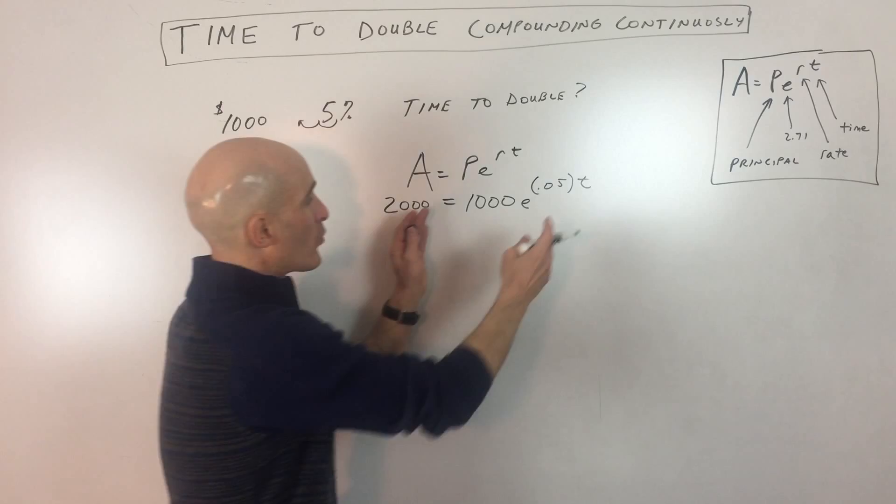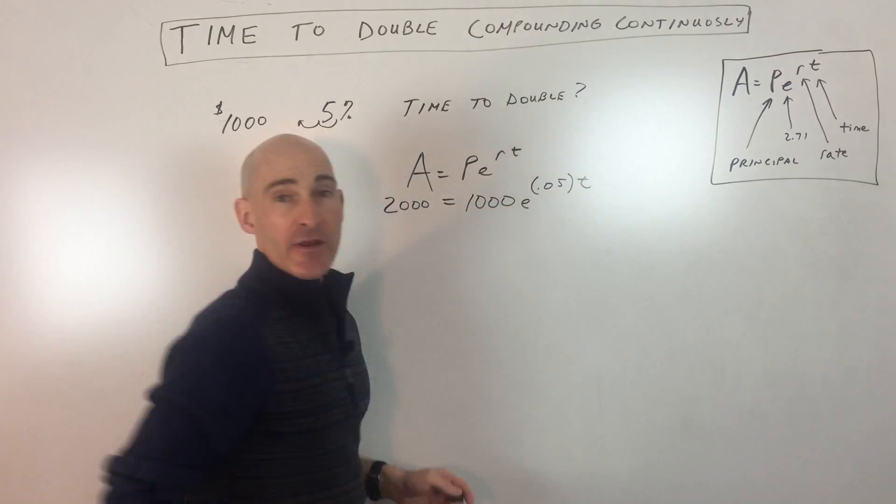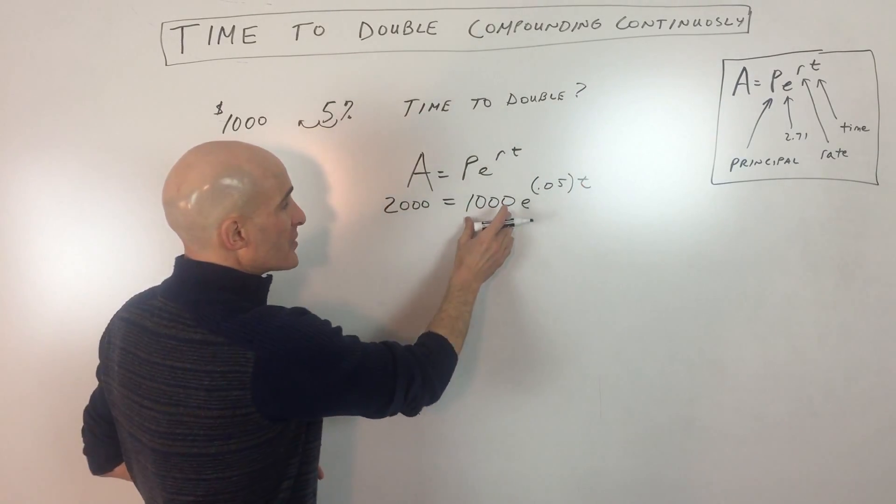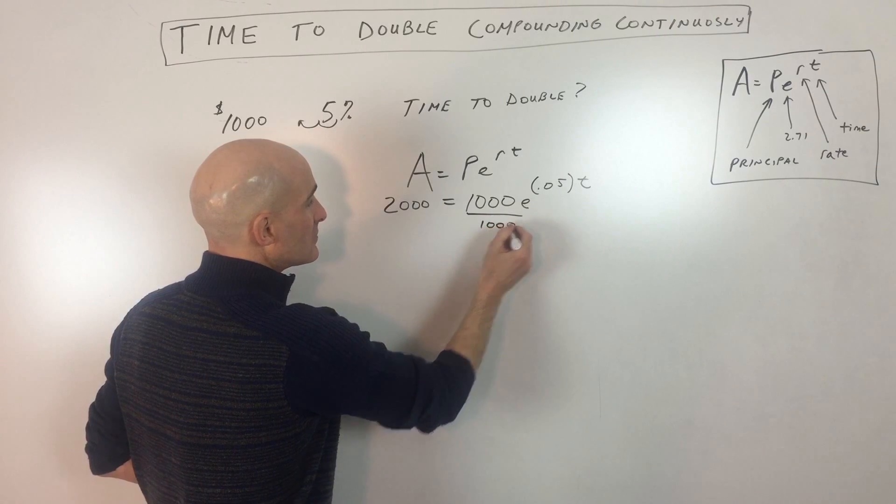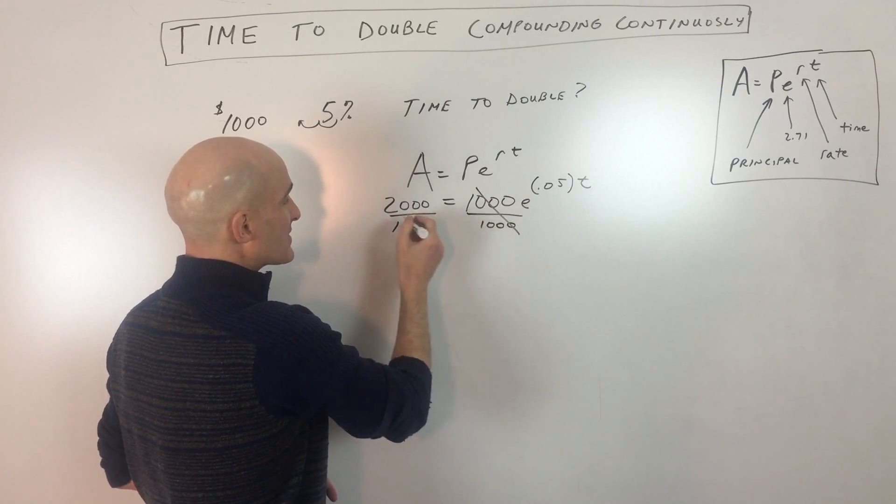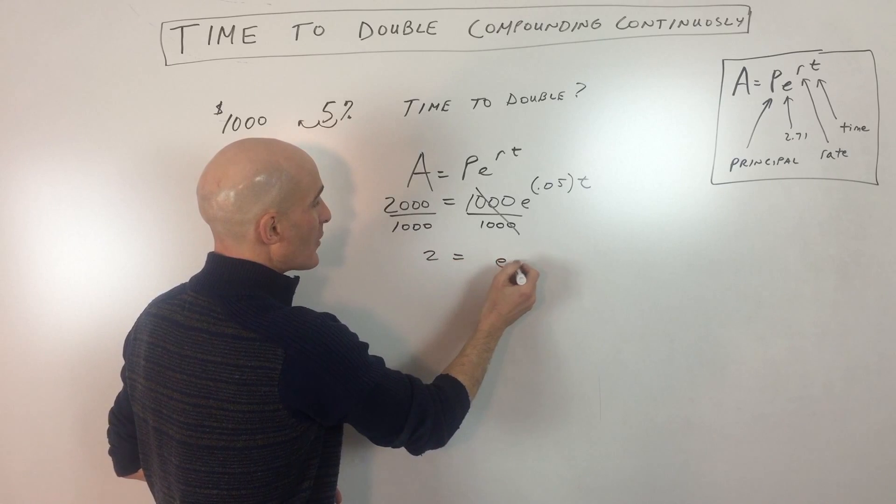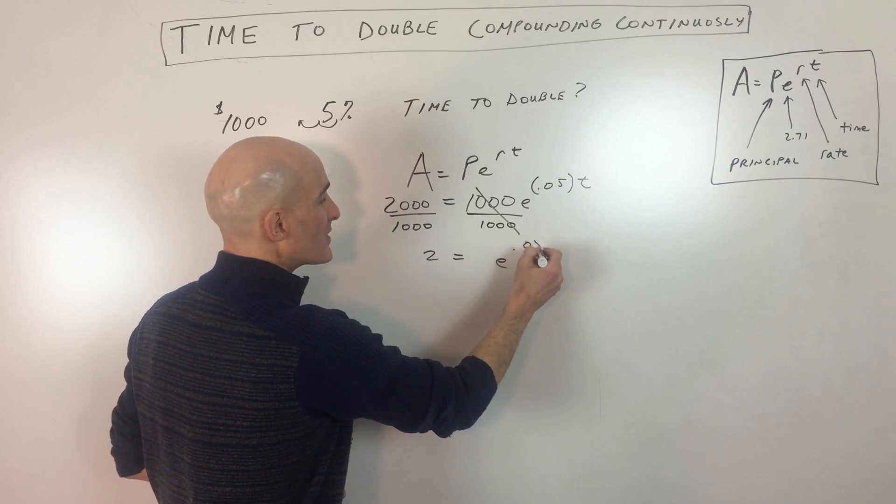What you can think about doing is working from the outside in towards the variable. So we're going to divide both sides by 1,000. You can see those are canceling, this is reducing to 2. So now we have 2 equals E to the 0.05 T.